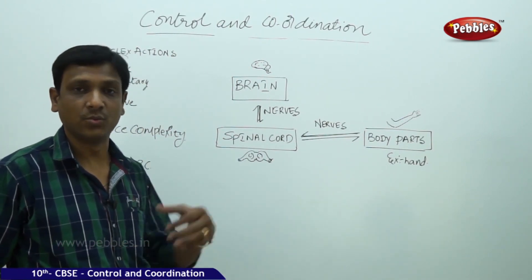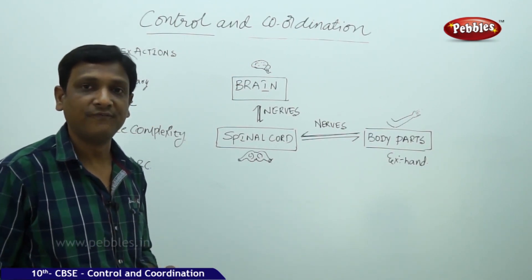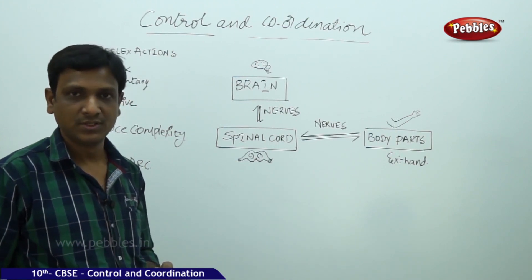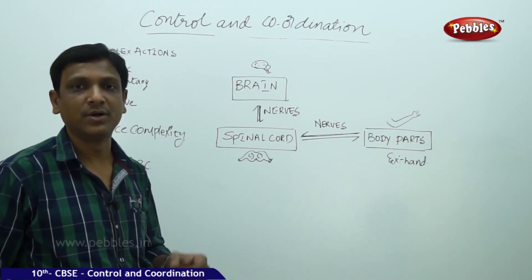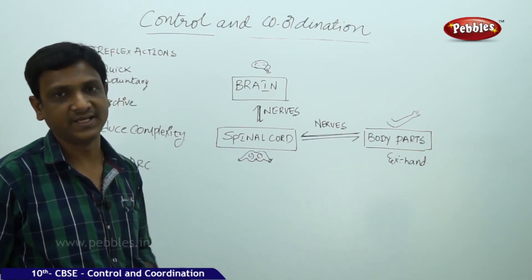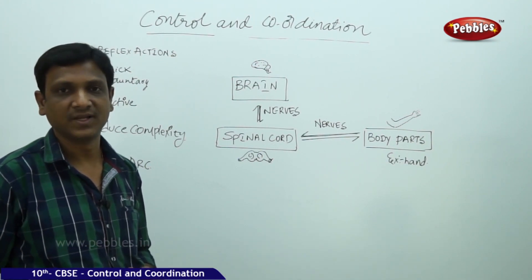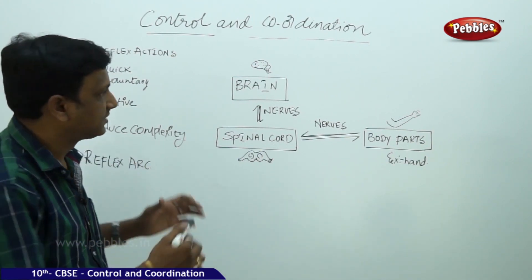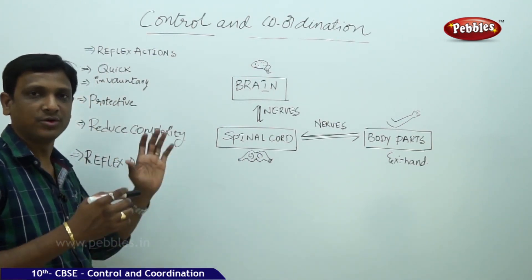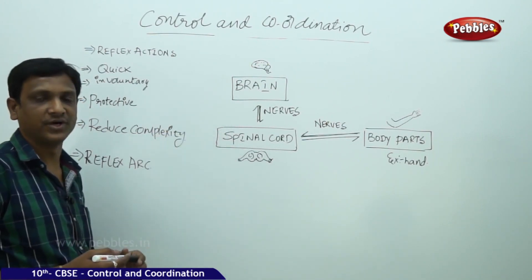What is that information? What is the change? Is it useful or harmful? What kind of response has to be produced? What type of movements are to be produced in the body? These kinds of decisions are taken by the nervous system, which is a very organized system with different parts, each performing a specific function.